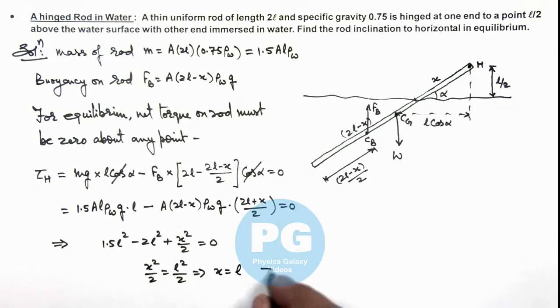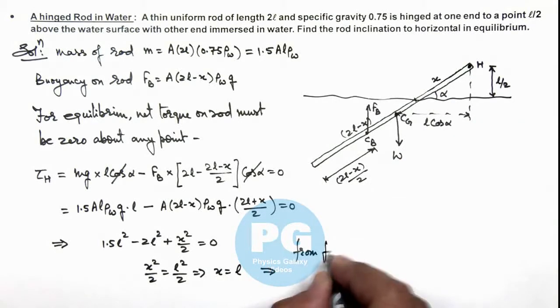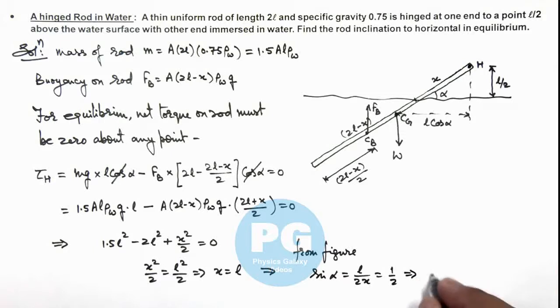And this implies here from the figure, we can get the value of sin α which is equal to (l/2) divided by x, that is equal to 1/2. This implies the value of α we are getting is 30 degrees. That is the result of this problem, the inclination of rod with the horizontal.